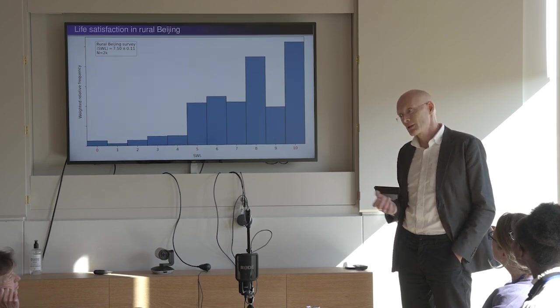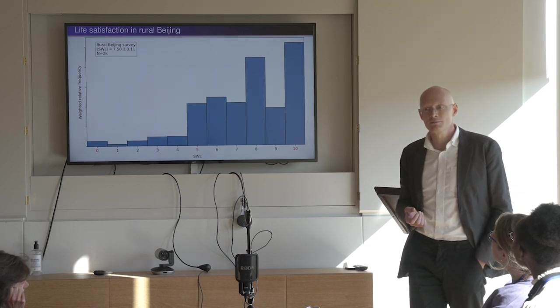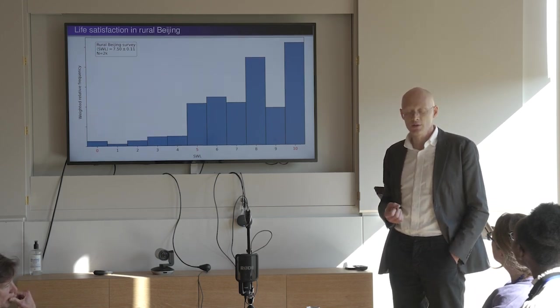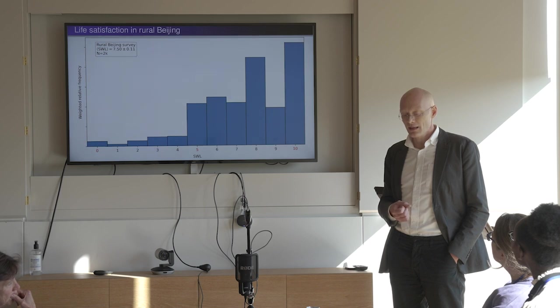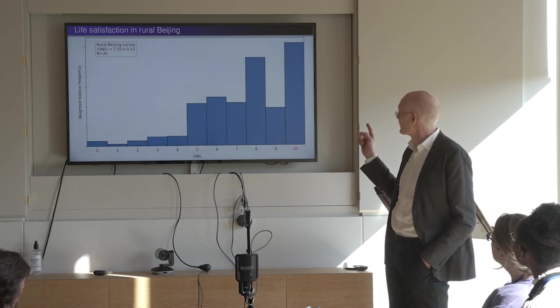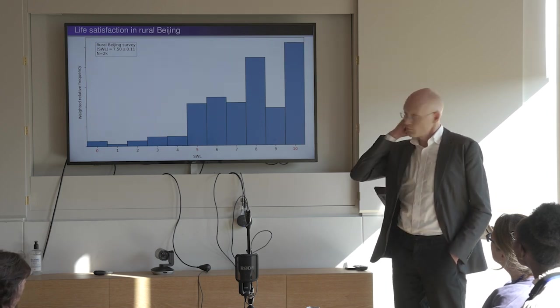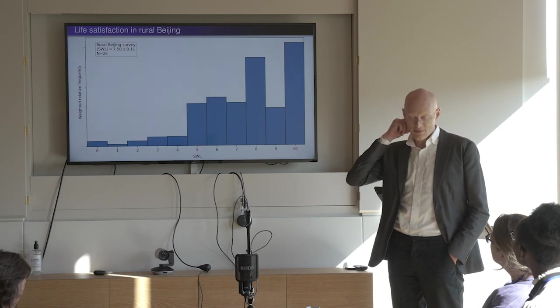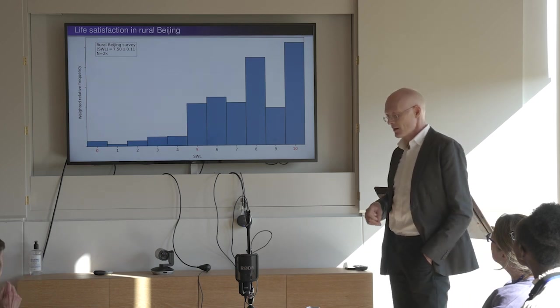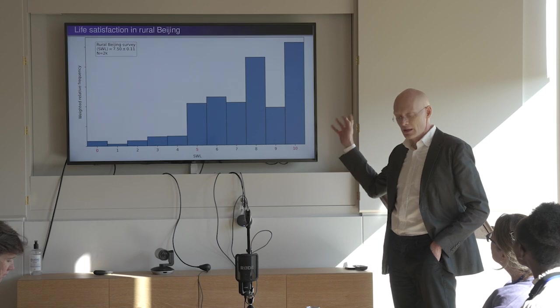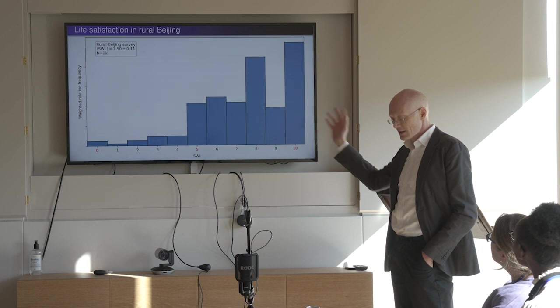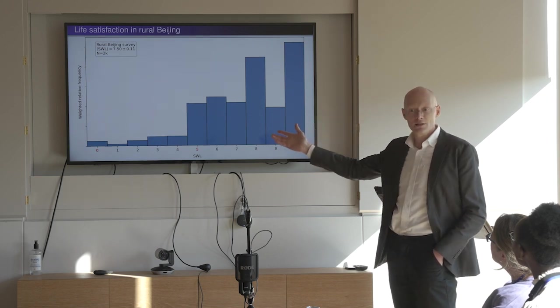So then the question is, how well do we understand the shape of distributions? To what extent are we modeling distributions? I want to stare at this, which is the answer to a 0 to 10 life satisfaction question: taking all things into account, how satisfied are you with your life these days on a scale of 0 to 10, in Chinese, for an elderly rural population around Beijing. Can you come up with a theory that explains the shape of this?